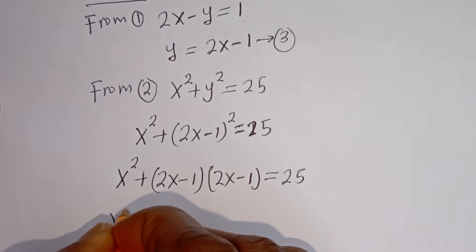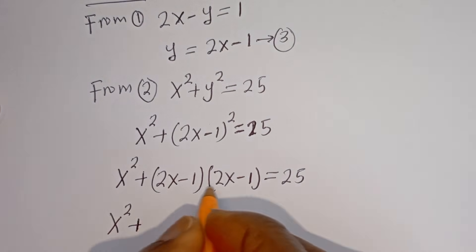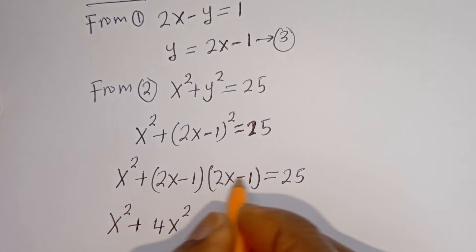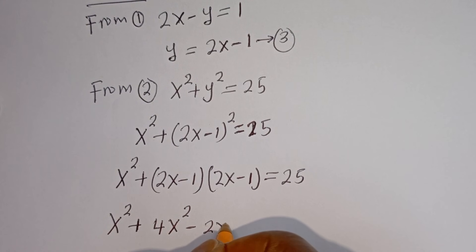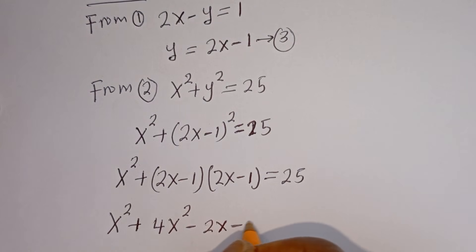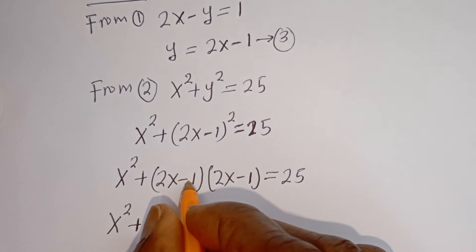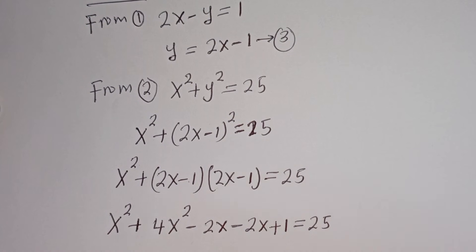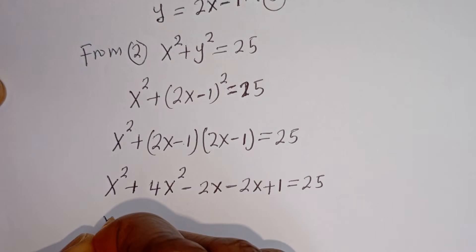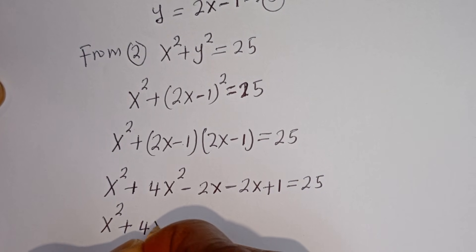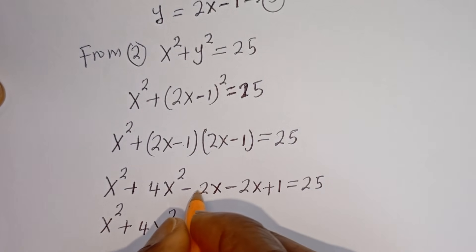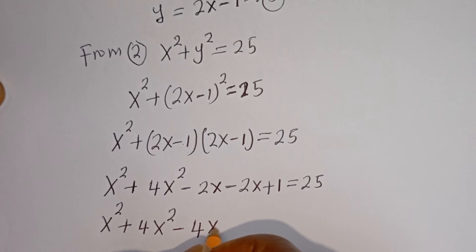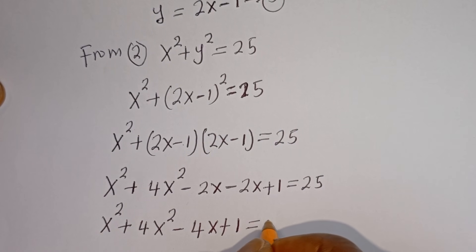Expanding the bracket: x squared plus 4x squared minus 2x minus 2x plus 1 is equal to 25. That gives us x squared plus 4x squared minus 4x plus 1 is equal to 25.